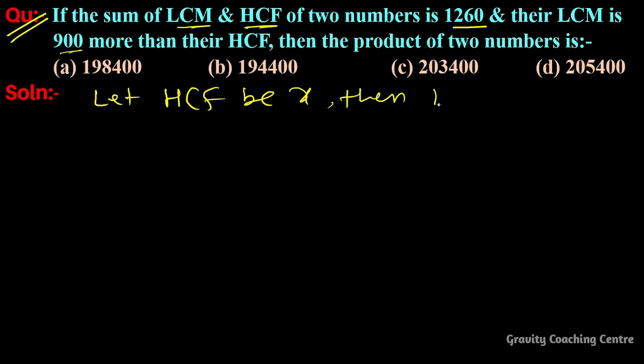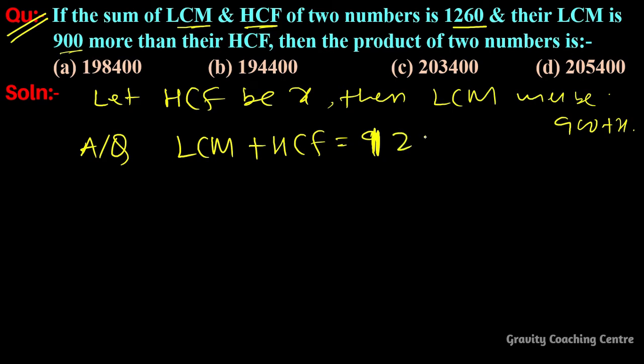So first of all, we let HCF be x, then LCM will be 900 plus x. And according to the question, the sum of LCM plus HCF equal to 1260.